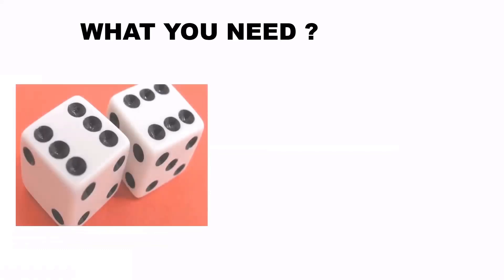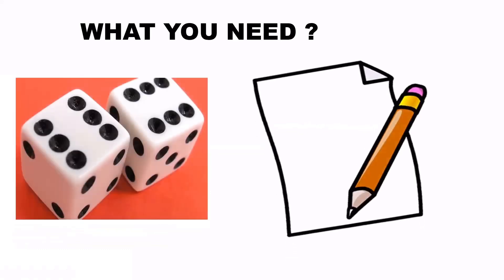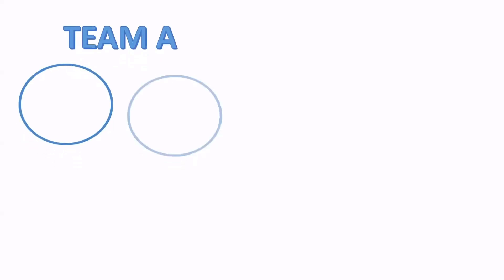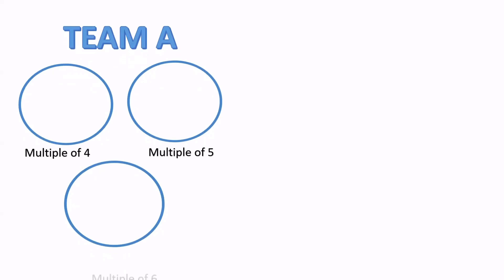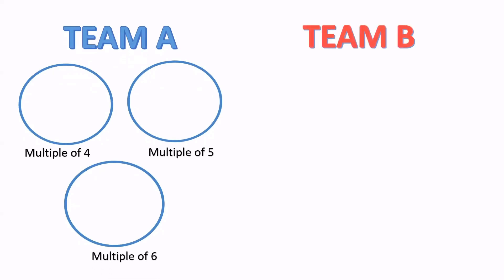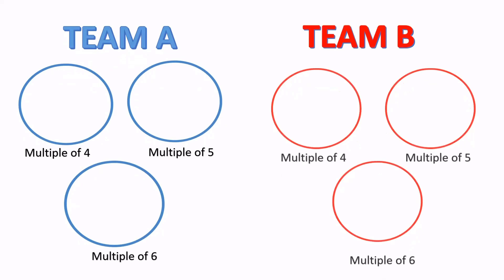All you need is a pair of dice and a sheet of paper and something to write with. There will be two teams to play. Team A will draw three circles as drawn on the screen — the first circle is for multiples of four, the second is for multiples of five, and the third is for multiples of six. Team B will draw the same.